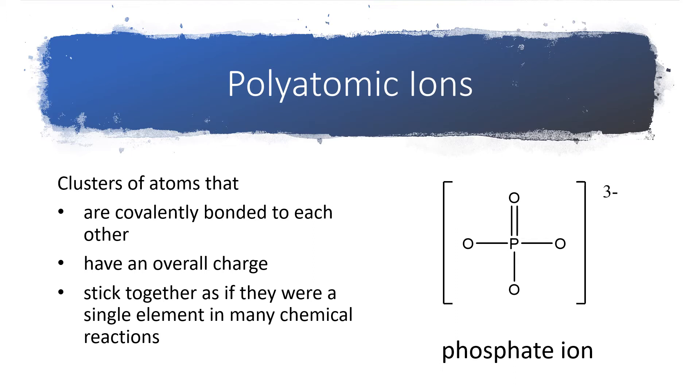An example of a polyatomic ion is shown over here on the right as the phosphate ion. It has a formula of PO4 with a minus 3 charge.